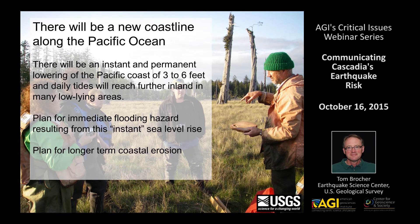There will be a new coastline after this earthquake. There will be an instant and permanent lowering of the coastline of three to six feet, allowing daily tides to reach much further into low-lying areas — essentially an instant sea level rise of three to six feet. This will create an immediate flooding hazard as well as longer-term coastal erosion. This slide shows USGS geologist Byron Atwater and dead trees that died because the coastline dropped three to six feet back in 1700.